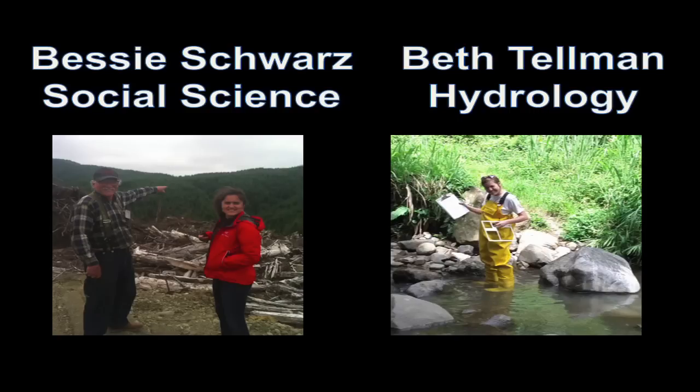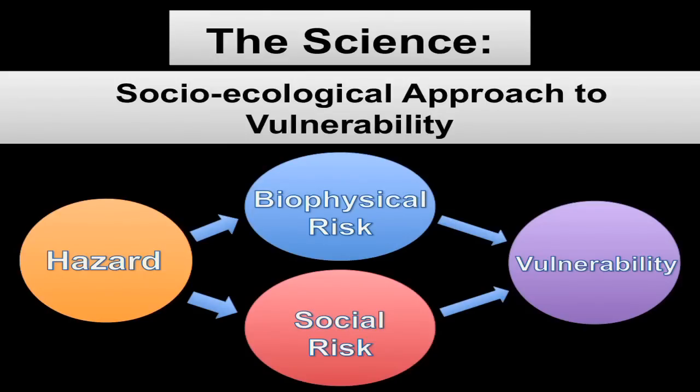I'm working on this project with my colleague Bessie Schwartz, who's here today. She studies social science and thinks about the social factors of risk. I'm studying hydrology, and I think about where water goes when it rains in a storm. We're bringing the best of our disciplines together under Susan Cutter's framework called the Socio-Ecological Approach to Vulnerability, that combines biophysical risk factors with social risk factors to paint a more full picture of what vulnerability looks like in a given hazard zone.